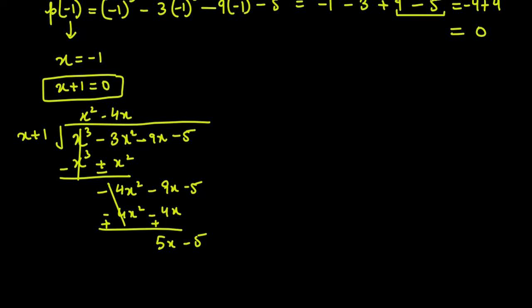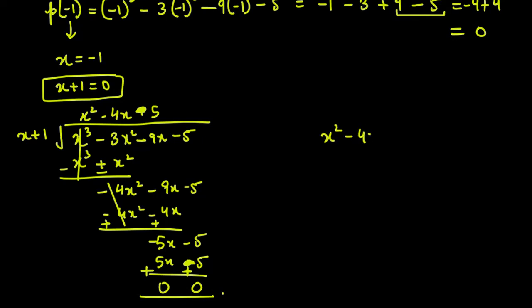After sign change: minus 4x square cancels. Then minus 9x plus 4x gives minus 5x. Bring down minus 5. To convert x into minus 5x, multiply by minus 5. So minus 5x plus minus 5. After sign change, minus 5x cancels and minus 5 cancels too, giving 0. The resulting polynomial is x square minus 4x minus 5.